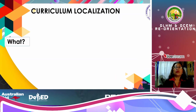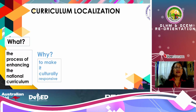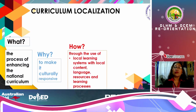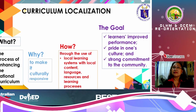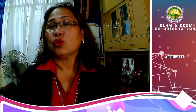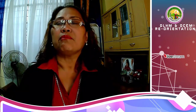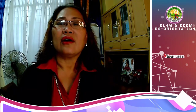Curriculum localization is the process of enhancing the national curriculum. Why do we have to enhance? Because we want to make it culturally responsive. We can do it through the use of local learning systems with local content, language, resources, and learning processes, for which the goal is the learners' improved performance. Why improved performance? Because they will take part in their own local history and their own culture. They will take pride in one's culture and have a strong commitment to the community, because they will better understand their community as they go along learning about other communities.